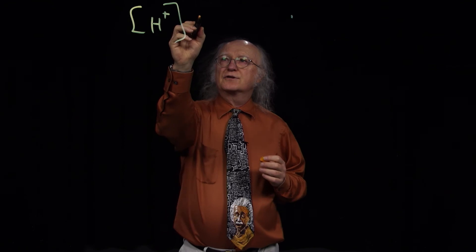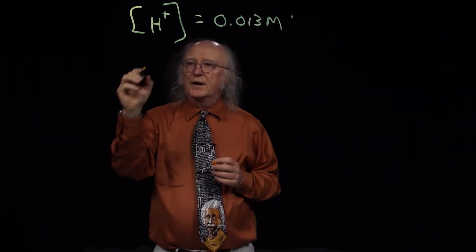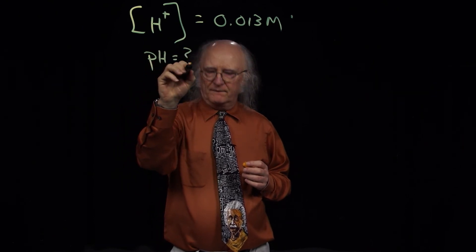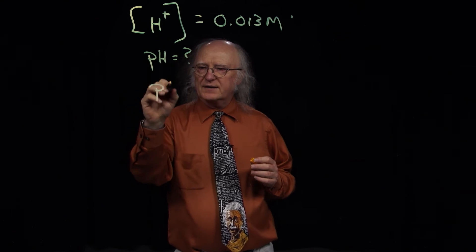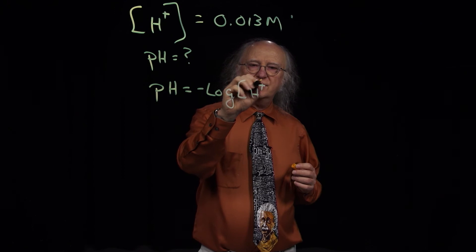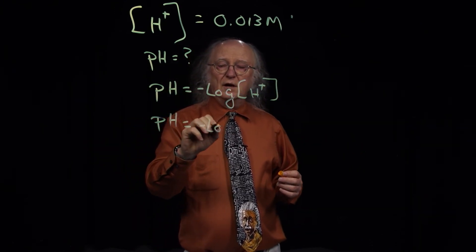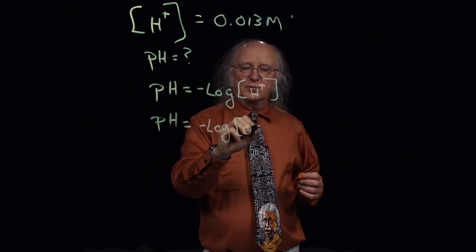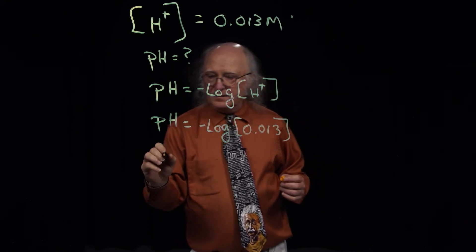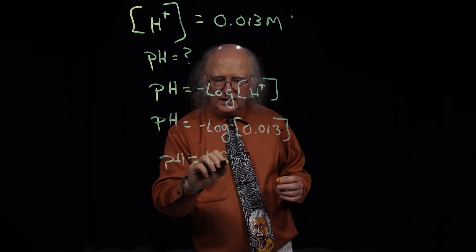Problem number four says that if the hydrogen ion concentration is equal to 0.013 molar, what is the pH? We go back to pH equals the negative log of the hydrogen ion concentration. In this case, we have the hydrogen ion concentration, so the pH is equal to the negative log of 0.013. The pH turns out to be equal to 1.89.